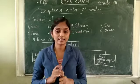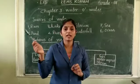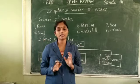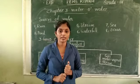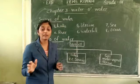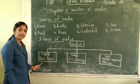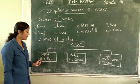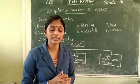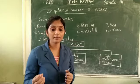And next is gas. We have so many gases in our surroundings. Now let us discuss the three forms of water. The liquid form of water includes rain and dew.